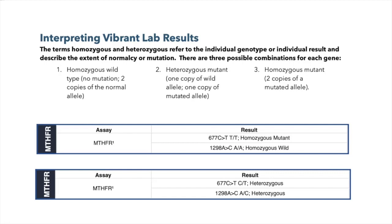In the next example, this patient has, for 677, one copy of the wild allele and one copy of the mutated allele — so that looks like a C and a T. For the 1298 gene, he's also heterozygous, meaning he has one copy of the wild allele (A) and one copy of the mutated allele. As in the last example on the previous slide, this person is compound heterozygous. So the first example was homozygous mutant / homozygous wild, and the second example is compound heterozygous.